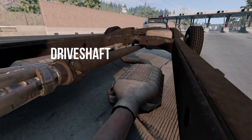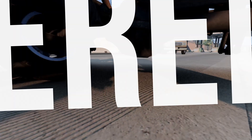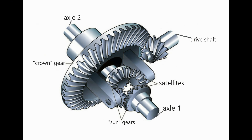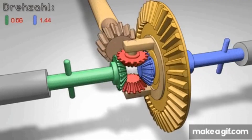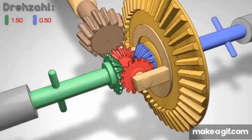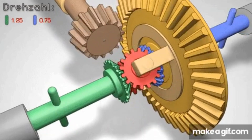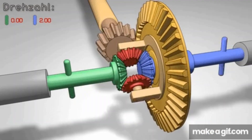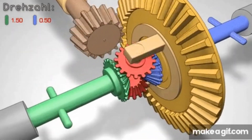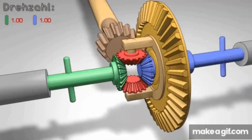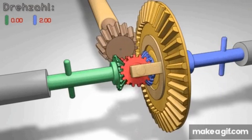First comes the engine, then the gearbox, then the driveshaft, and then we reach the differential. Let's look at the picture of the differential structure. Here is the driveshaft, which is connected to the so-called crown gear. Satellite gears are rigidly connected to the crown gear, which are then connected to the sun gears — that is, to the axles to which the wheels are attached. How it works is quite simple: torque is mainly transmitted through the satellites, which transmit it to the wheels with less load. For example, when the car turns, the wheels in the direction of turning receive more load, so the differential transmits less torque to them and more torque to the wheels that pass a larger circle when turning — those that turn more easily and have less load.